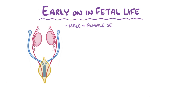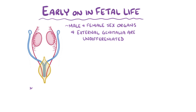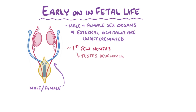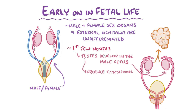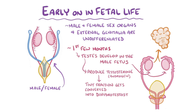Normally, very early on in fetal life, male and female internal sex organs and external genitalia are undifferentiated and look identical. Within the first few months of development, testes develop in the male fetus. The testes start producing testosterone, which is a male steroid hormone that belongs to a class of hormones called androgens. The testosterone gets released into the blood, and a tiny fraction of it gets converted to dihydrotestosterone by 5-alpha reductase, which is mainly made in the skin of the genital area.